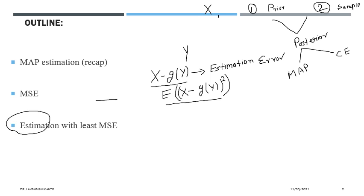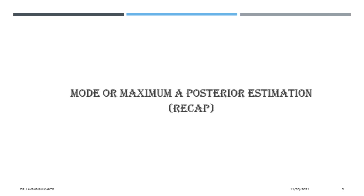There are various estimators — sample mean, sample median, sample variance, sample mode — and among all of them we try to talk about mean square error. The estimator with the least mean square error is what we desire. In addition, at the end we will discuss estimation error in detail. These are all the contents of today's lecture.